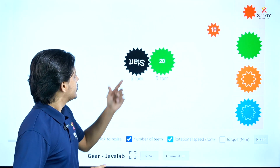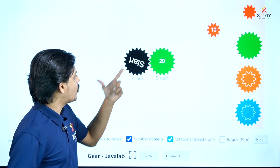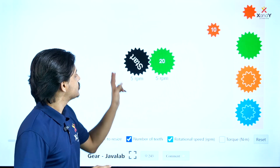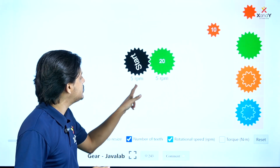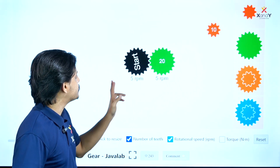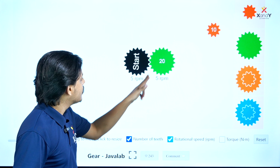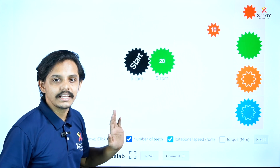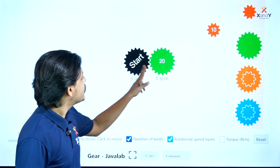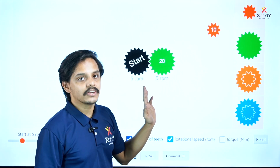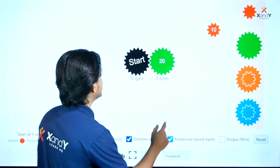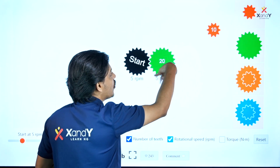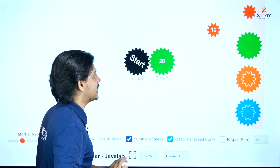Let's look at the first motor. We have 20 teeth on this gear at 5 rpm speed, clockwise direction. We are going to connect a second gear, and it will turn in the anti-clockwise direction.